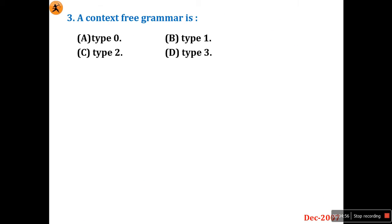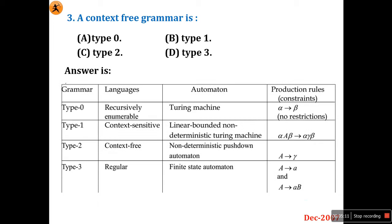Question number three: a context-free grammar is type 0, type 1, type 2, or type 3? This is a very important question related to theory of computation. Just remember this table: Type 0 is a recursive enumerable language, read by a Turing machine with no restriction on productions. Type 1 is context-sensitive grammar, read by a linear bounded non-deterministic Turing machine.